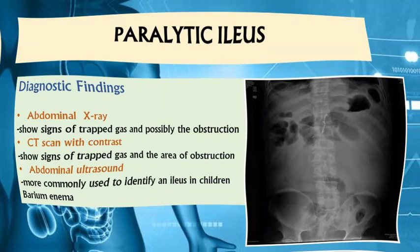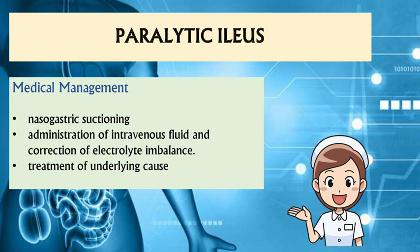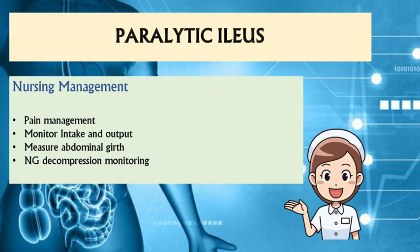For medical management, nasogastric suctioning may be done to relieve pressure, and IVF administration is advised to promote electrolyte balance. Nursing management for paralytic ileus focuses on a symptomatic approach such as pain management, assessment of the client's intake and output, measuring abdominal girths to check for distension, and monitoring nasogastric decompression through its output.